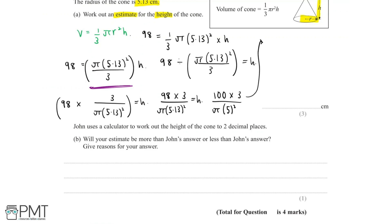Let's simplify this. We can say height is equal to 300, because 3 times 100 is equal to 300, over 25π. We can say 25 because 5 squared is equal to 25. And so 300 divided by 25, if we divide both sides by 25, we're left that h is equal to 12 over π.